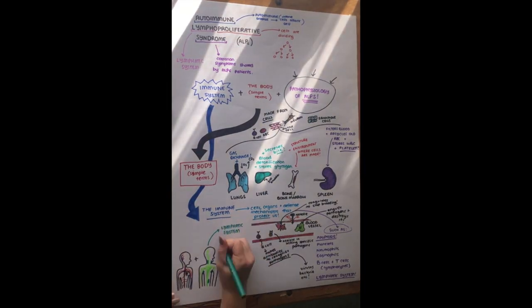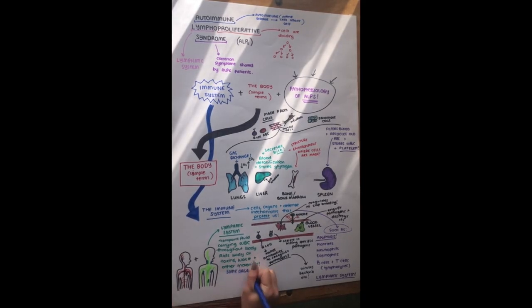And this is really important because it transports fluid. It carries white blood cells, which we know are very important for the immune system to attack bad things. And it also rids the body of toxins, waste and other materials. So a lot of the organs involved in the lymphatic system include the spleen, the thymus and the lymph nodes. And that's really good. And it's a big part of our immune system.